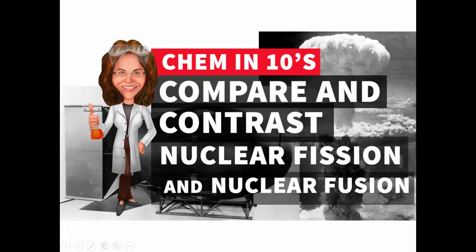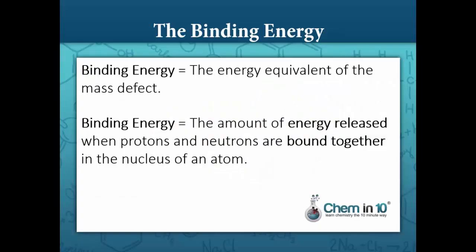In this video, we will learn about and compare and contrast nuclear fission and nuclear fusion. In our last lesson, we talked about mass defect and binding energy, the latter of which we defined as the amount of energy released when protons and neutrons are bound together in the nucleus of an atom. This is the energy that we get from nuclear fusion and nuclear fission.